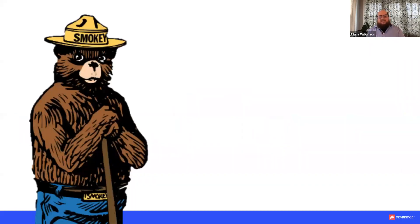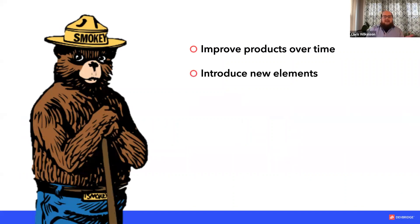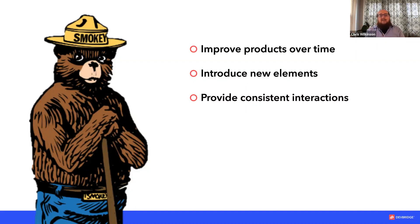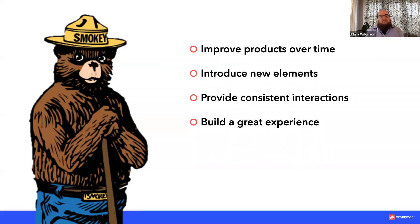What this means for design systems is that we need to improve products over time. Your governance model needs to be set up to improve products over time, introduce new elements, and provide consistent interactions both to the team and to the people using it. Be mindful of what components make it through for everyone to use. And finally, focus on building that great experience — if you get too caught up in having a very particular governance model, your energy goes to an internal power struggle rather than building a great product.